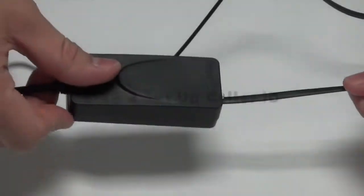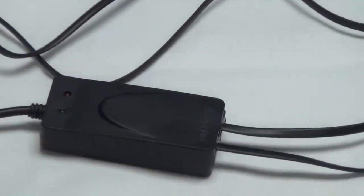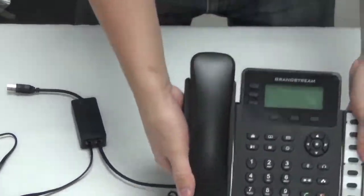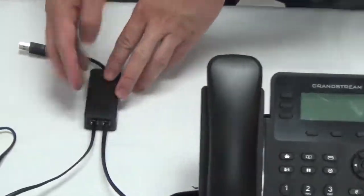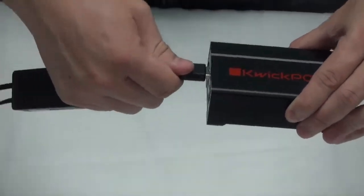Step 3. Connect caller ID modem's line port into the phone port set up by the phone company. And connect caller ID modem's phone port into the telephone. Then plug USB port into the QuickPOS server.